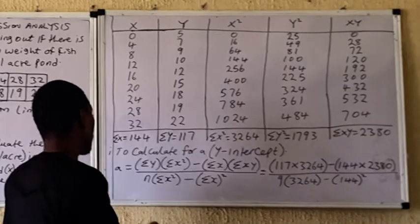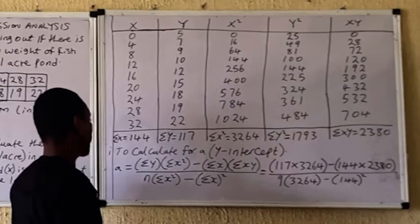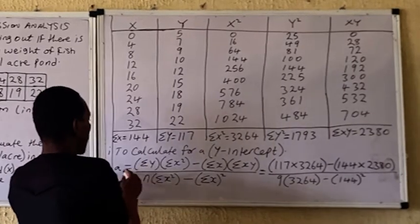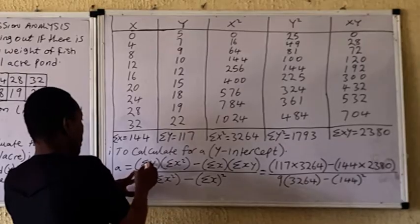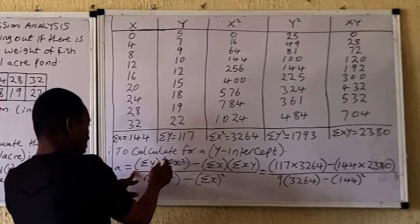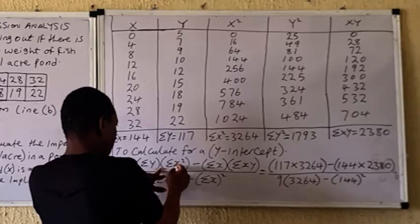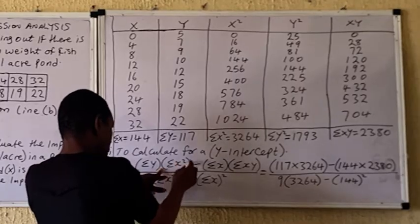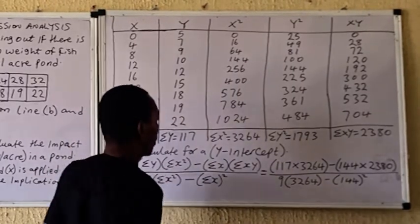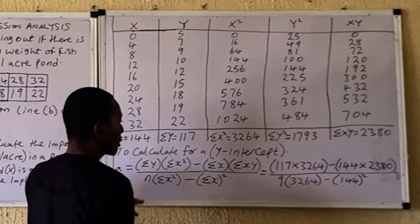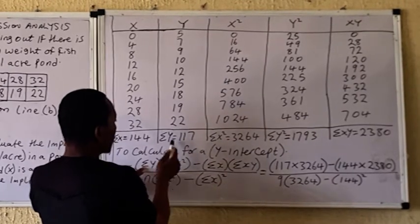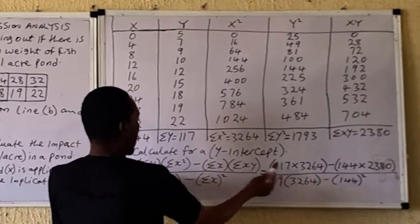The first thing is to calculate the y-intercept, then calculate the slope. The formula for the y-intercept is written on the board: a (the y-intercept) equals the summation of y times the summation of x-squared, in brackets, as written on the board.